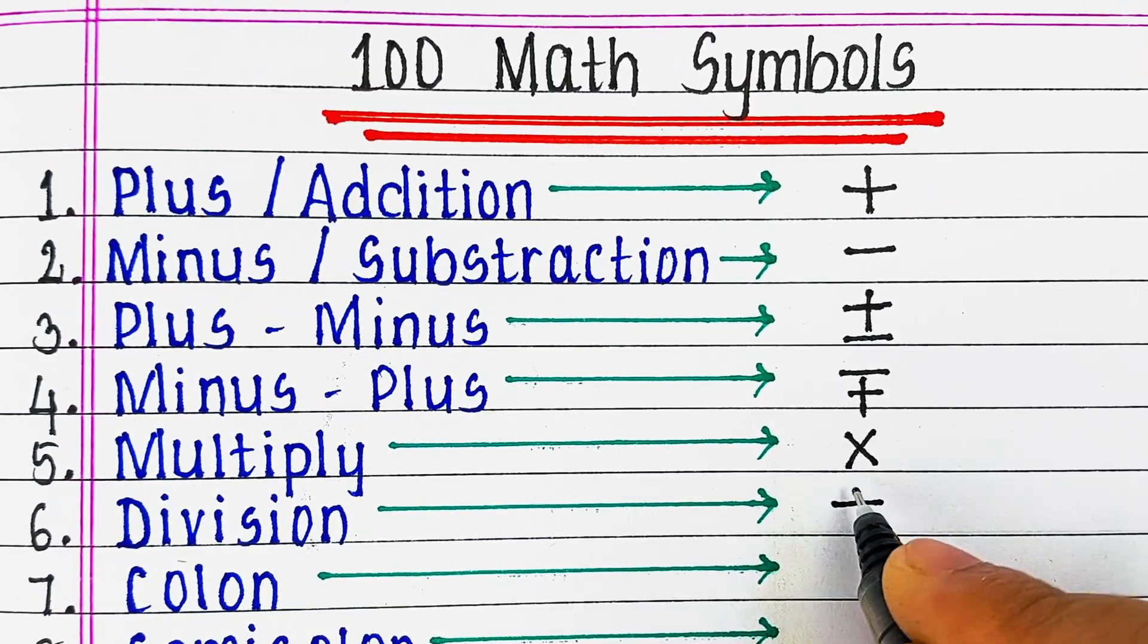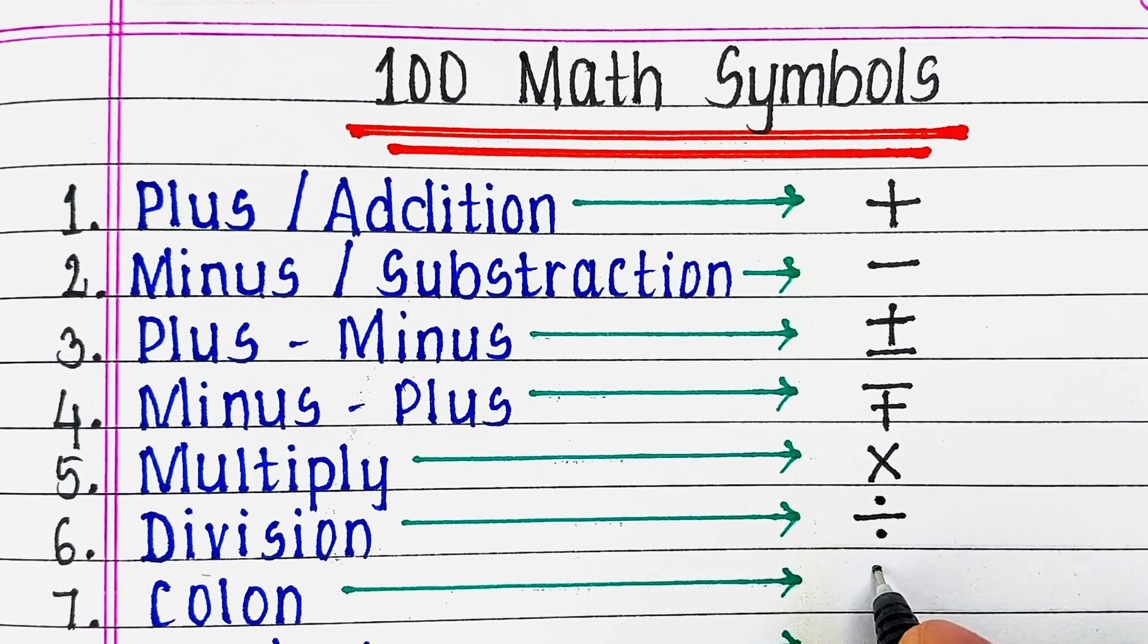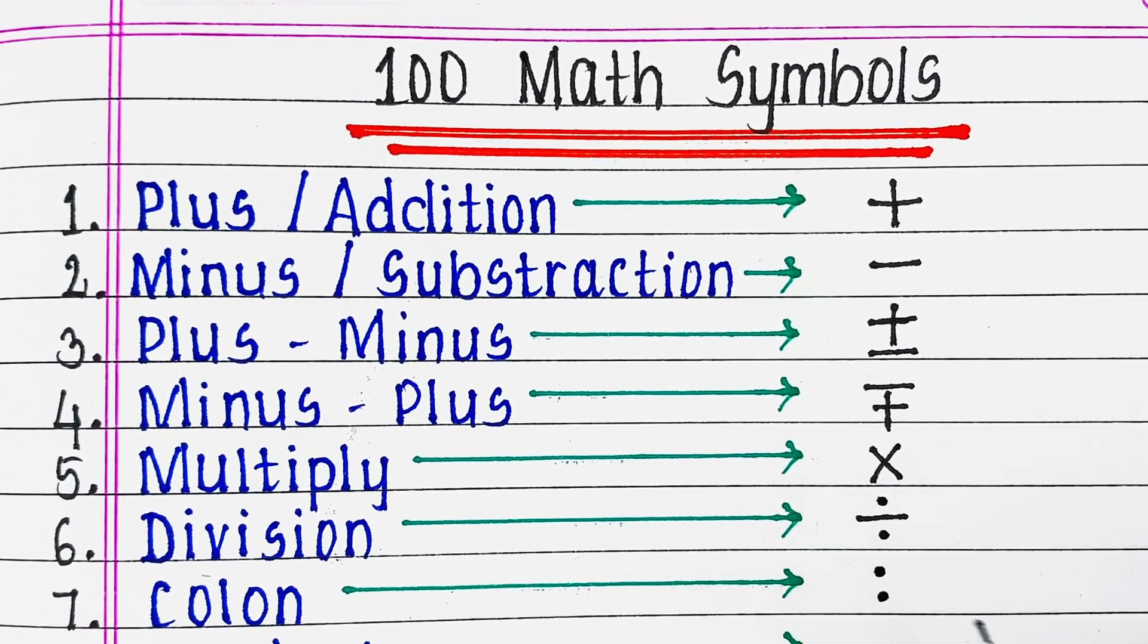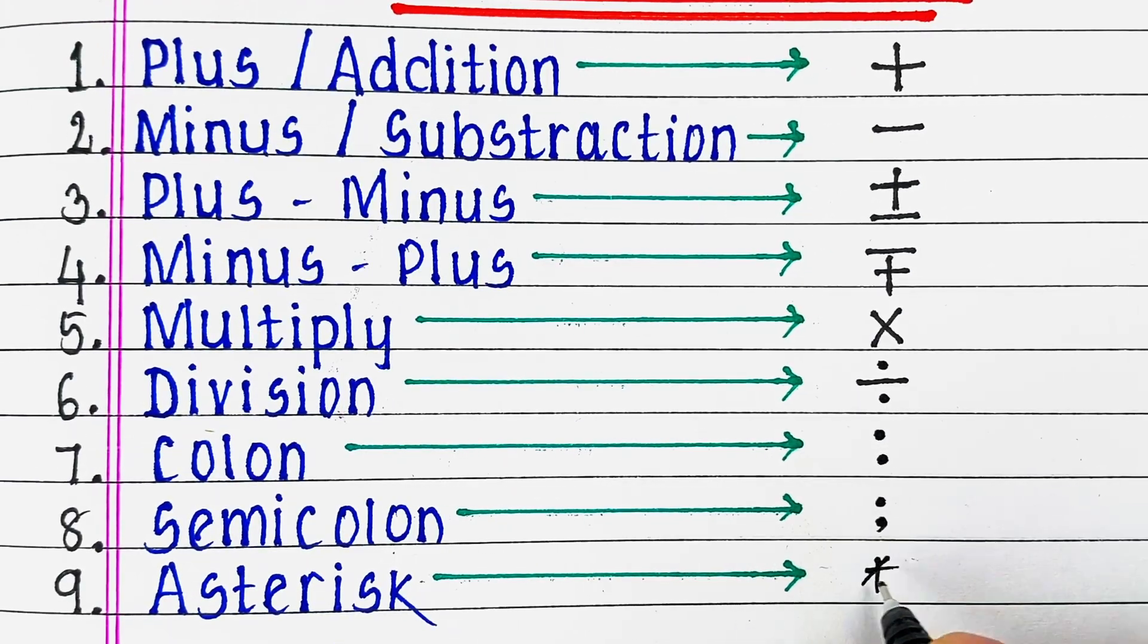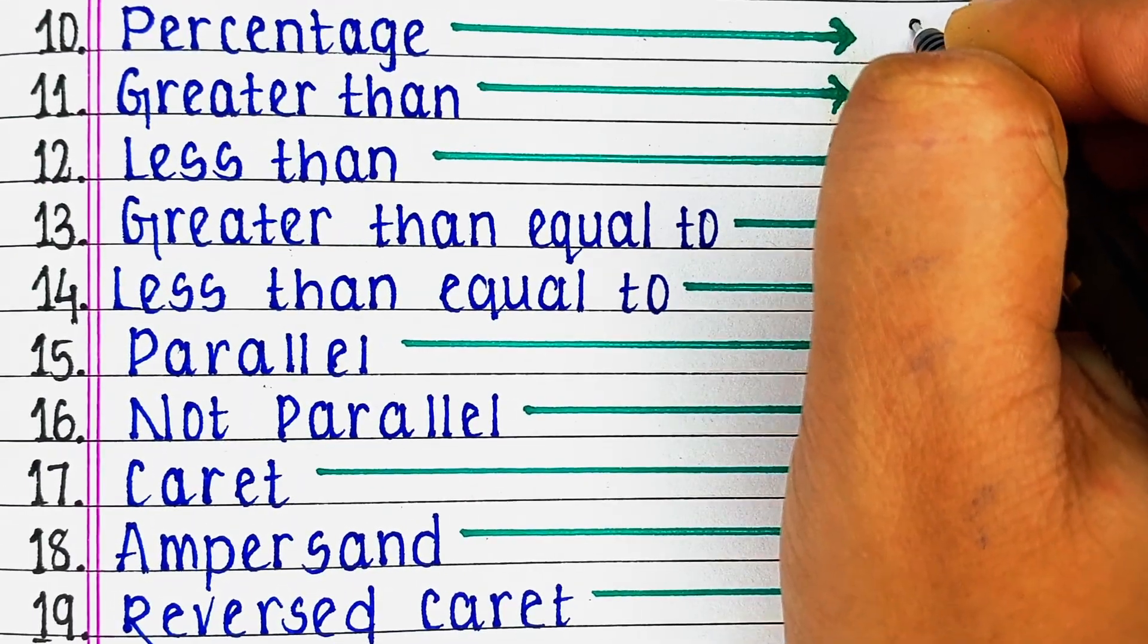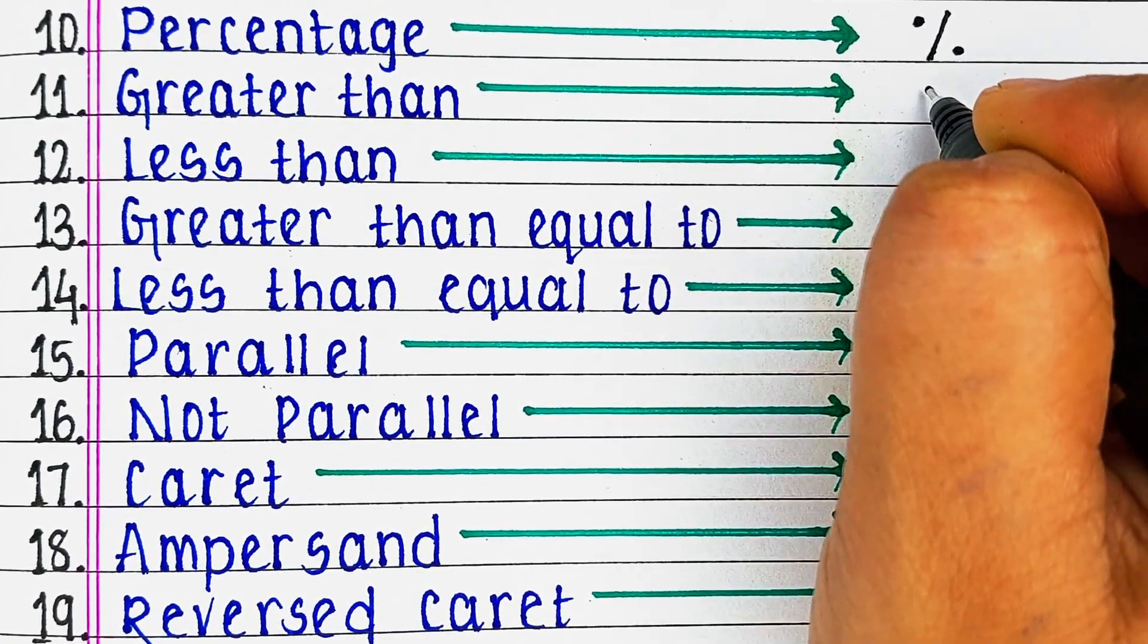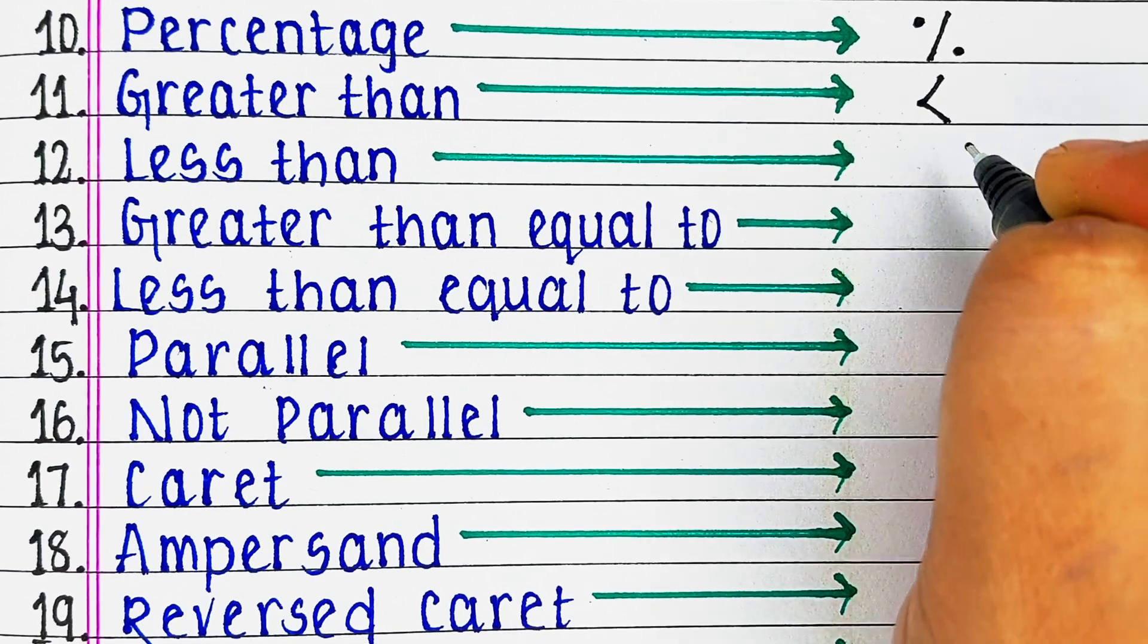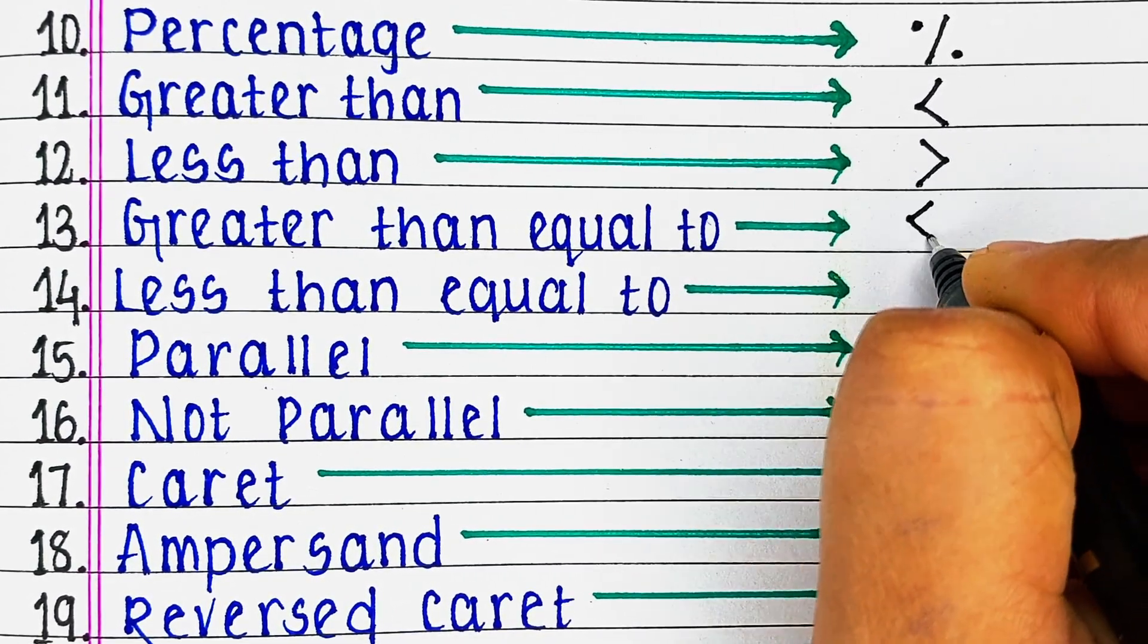Next is division, next colon, next semicolon, next asterisk, next is percentage, next is greater than, next less than.